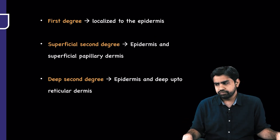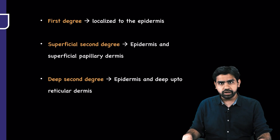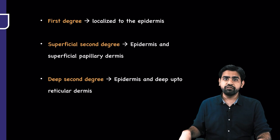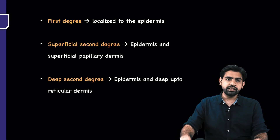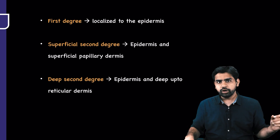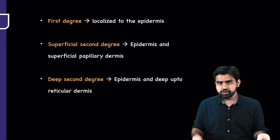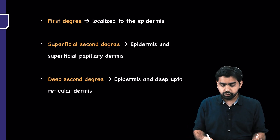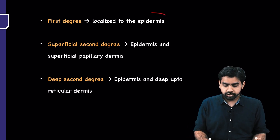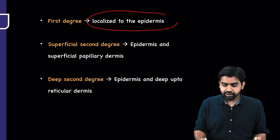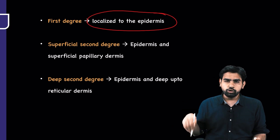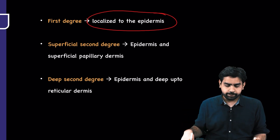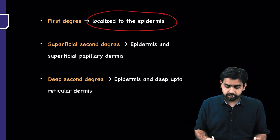Now let's classify the burns into different degrees. We have first degree, superficial second degree, deep second degree, third degree, and fourth degree. In first degree burns, the burn is localized to the epidermis only.